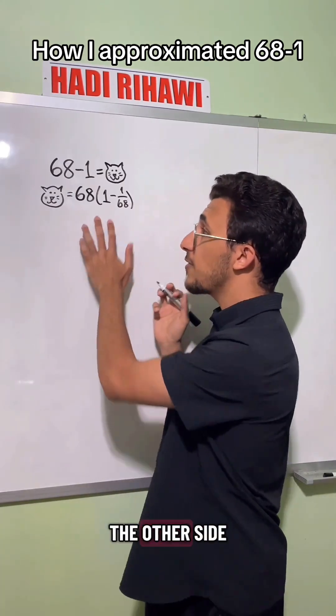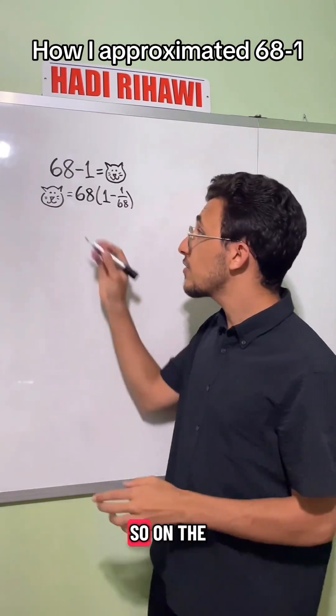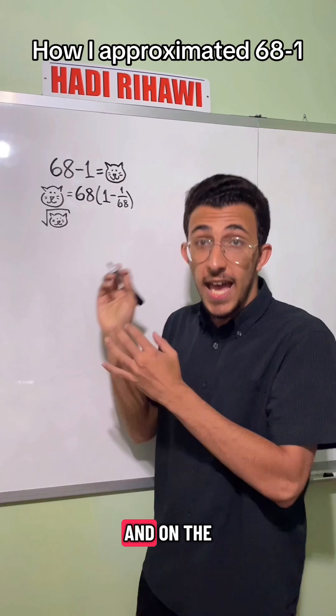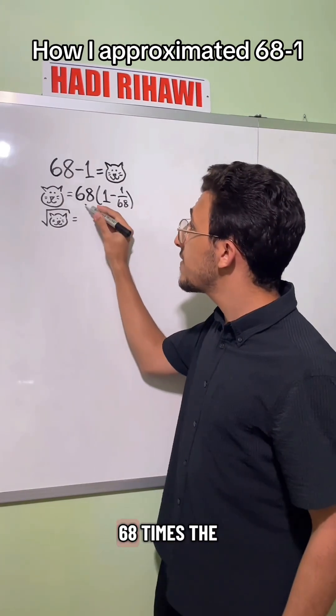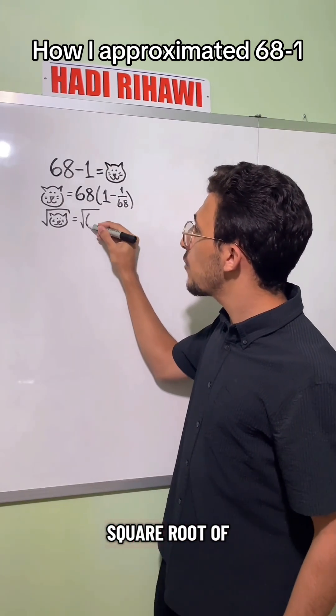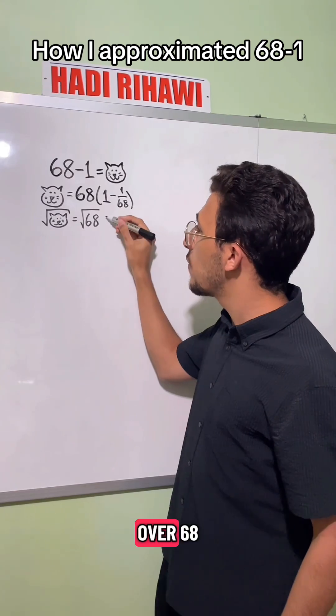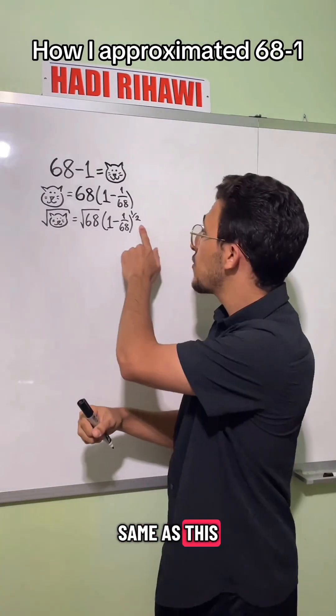Then, whatever I do to one side, I do to the other side. I'm going to take the square root on both sides, so on the left side, we'll have the square root of cat, and on the right side, we'll have the square root of 68 times the square root of 1 minus 1 over 68, where the square root is the same as this 1 half power.